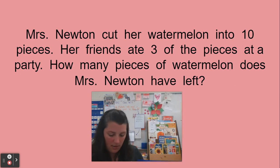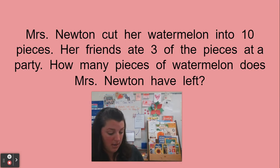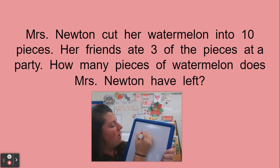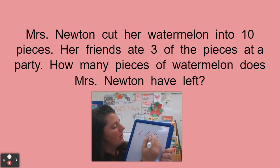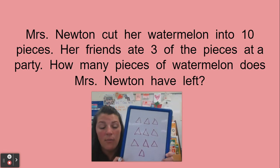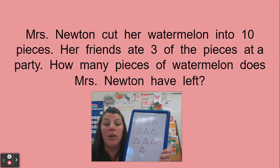Some friends also got rid of those watermelon pieces. Some friends were able to use a drawing to show this. What they did was they drew the pieces of watermelon — one, two, three, four, five, six, seven, eight, nine, ten. And then we know when we're taking something away, if we draw a picture, we can put an X on it.